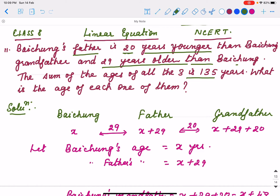Generally you think that there are three persons: Baichung, his father, and grandfather. Who is the eldest one? Grandfather. Then who is the smallest? Baichung.